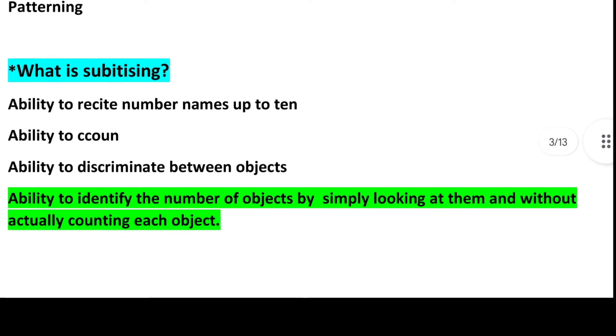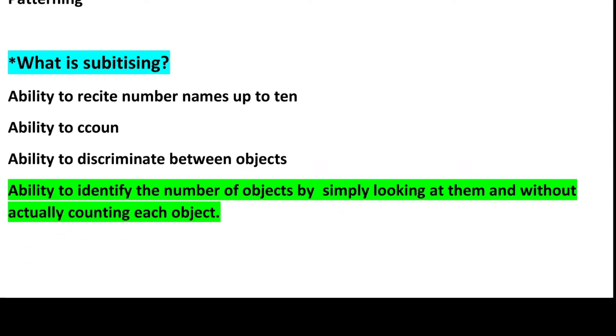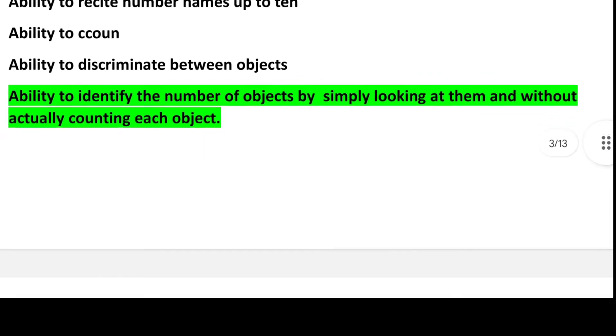Next question: Which of the following is the most appropriate strategy to teach shapes at a foundational stage? Answer is Option 3, Children should be given ample opportunities to develop intuitive understanding of shapes. Next question: Which of the following does not involve the ordering of a collection of objects according to the given rule? Answer is Option 3, Classification. What is subitizing? Answer is Option 4, Ability to identify the number of objects by simply looking at them without actually counting each object.